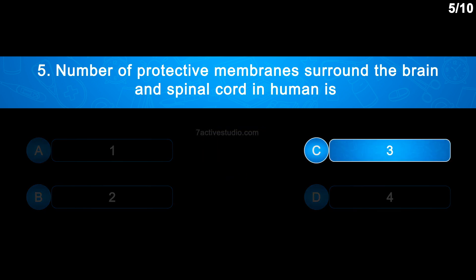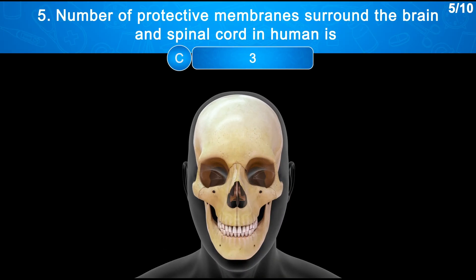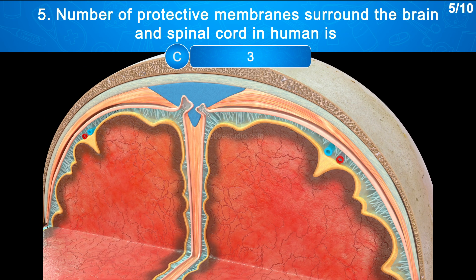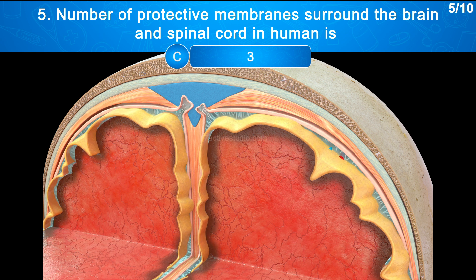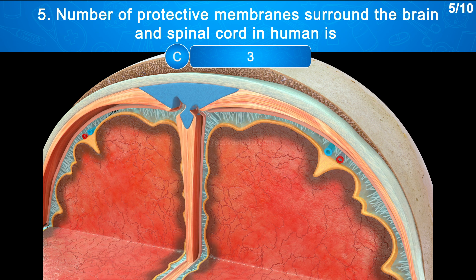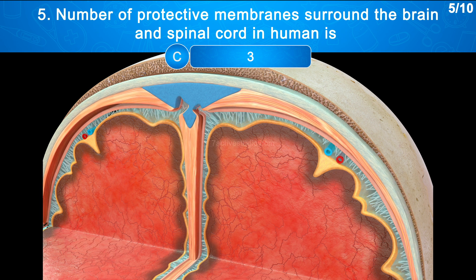Question No. 5: How many protective membranes surround the brain and spinal cord? The correct answer is Option C: 3. The brain and spinal cord are protected by three layers of membranes known as meninges. The pia mater is the fragile inner layer. The arachnoid, a web-like structure that cushions the brain, is the middle layer. The dura mater is the robust outer layer.